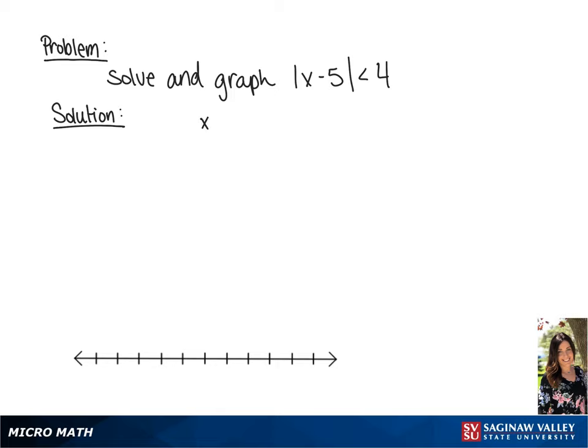We have the absolute value of x minus 5 is less than 4, giving us two inequalities: x minus 5 is less than 4, and x minus 5 is greater than negative 4.